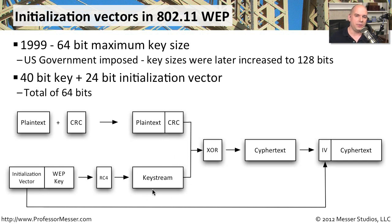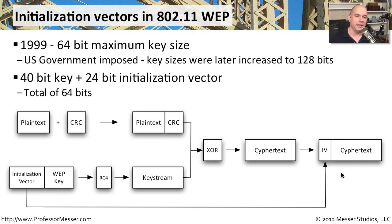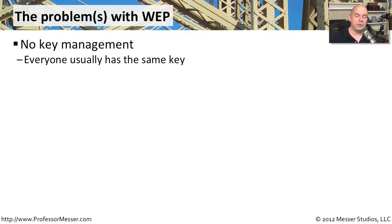All of that information together will now be combined with the plain text and CRC in an XOR fashion to come up with the final cipher text, and that's what's sent to the other side. Notice that the initialization value — the original value, before anything was encrypted — is also included with the cipher text sent to the other side, because that remote station needs to decrypt this information. That initialization vector is the only thing that is different that it needs to know. With WEP encryption, everybody has the same key, and that's the key value used when sending information across the network.